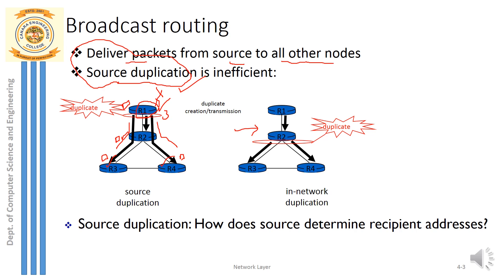The alternative technique: a source router like R1 sends only one copy of the packet to its neighbor R2. R2 then knows that R3 and R4 are its two neighbors, so R2 creates two copies of the packet — not R1. These duplicates are created at R2, and those two copies are forwarded to R3 and R4.